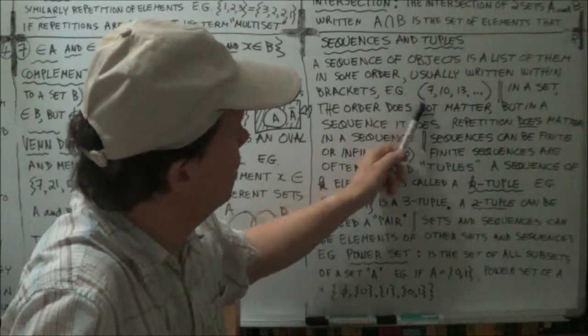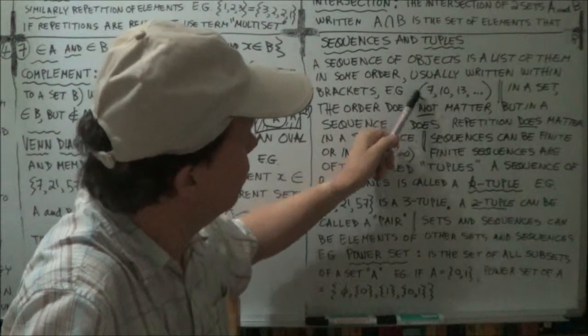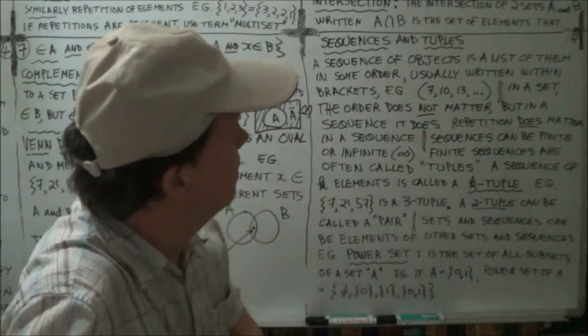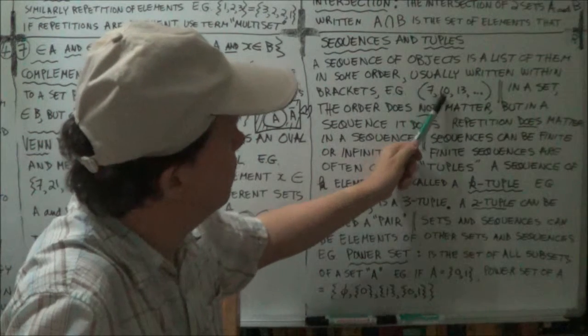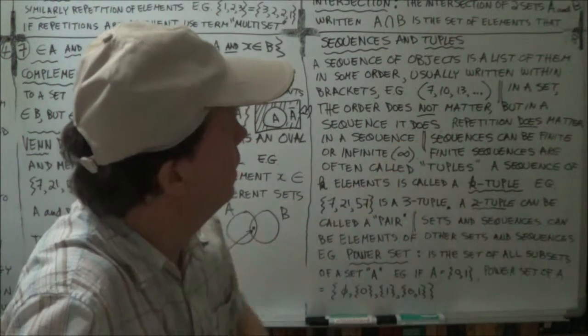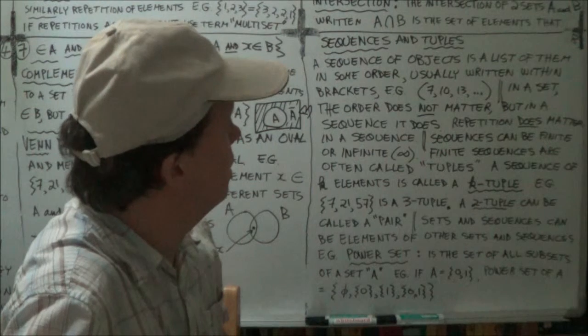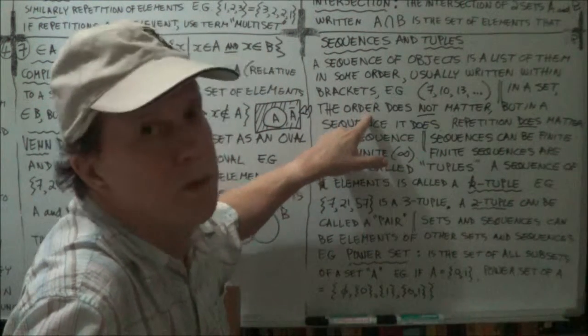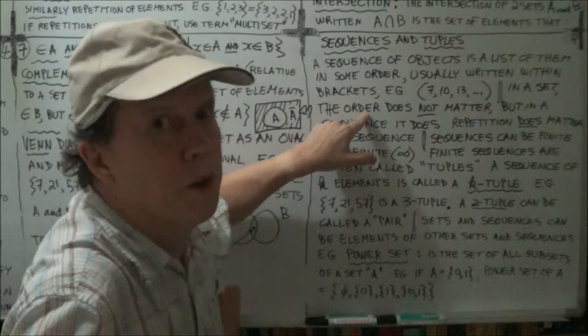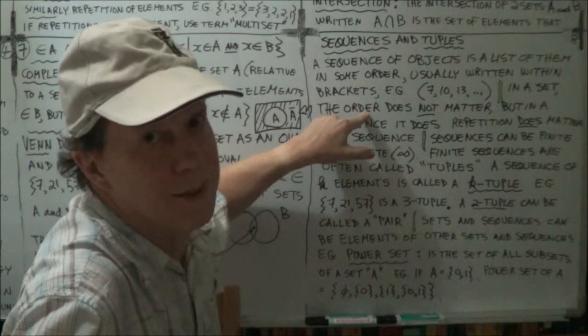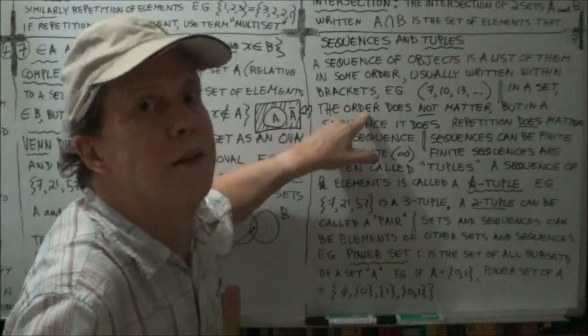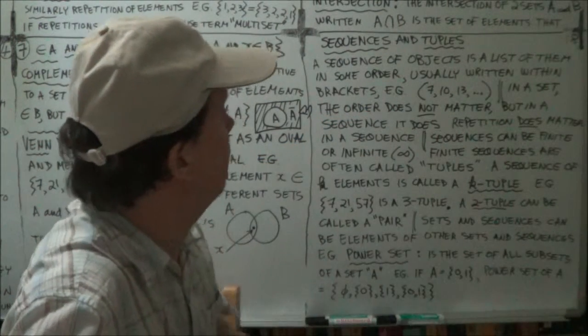And often written within parentheses, like these round brackets, not wiggly brackets. So that's a sequence of numbers, where the order is important. Now in a set, remember, from what we just said earlier session, the order of the members elements in the set doesn't matter. That's irrelevant. But in sequence, it does matter. Remember that.